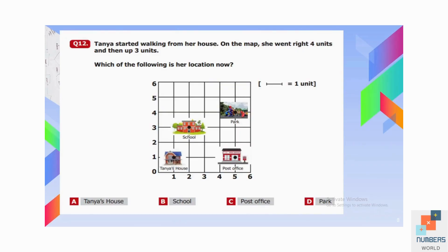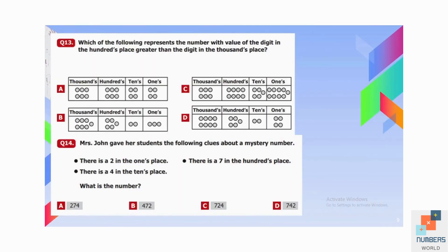Question number twelve: Tanya started walking from her house on the map. She went right four units and then up three units. Taking four steps to the right reaches the post office, and three steps up reaches the park. Her location is D, the park.